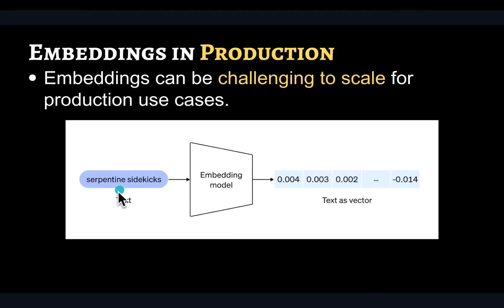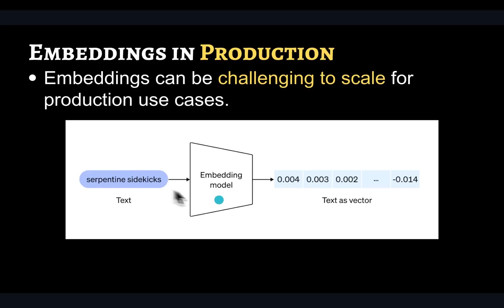An embedding model will receive text as an input. If you are working with a text embedding model, the output is going to be a fixed-size vector irrespective of the size of the input text. This fixed-size vector is going to represent the semantic meaning of your text input.